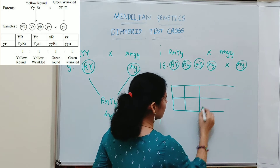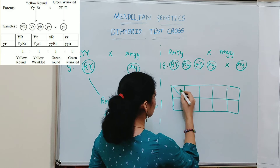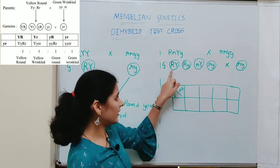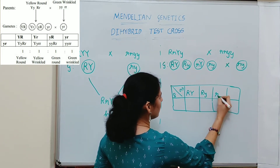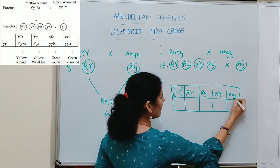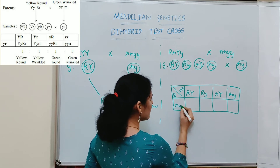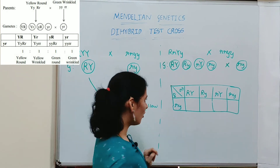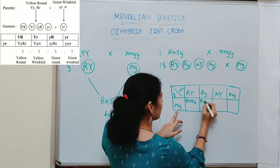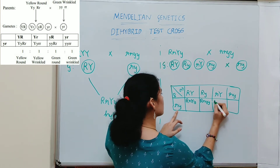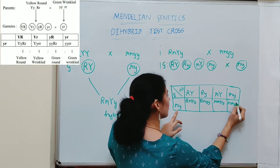We will draw the Punnett square to find out the possible results of this genetic cross. The male gametes are written on top: RY, Ry, rY, ry. The only female gamete is ry. The genotypes of the possible offspring are: RrYy, Rryy, rrYy, and rryy.